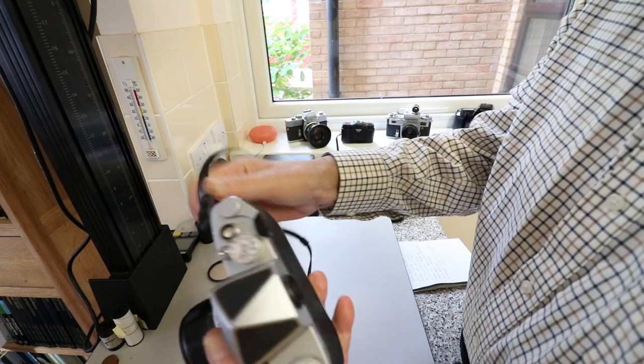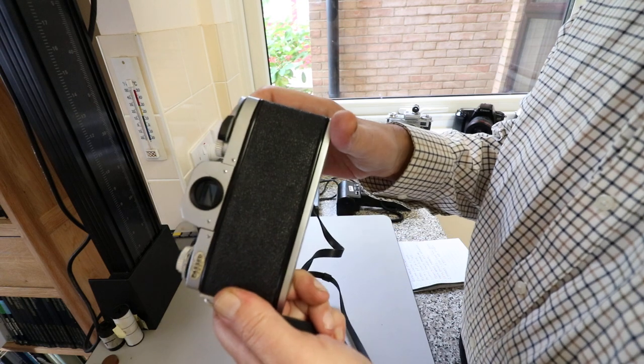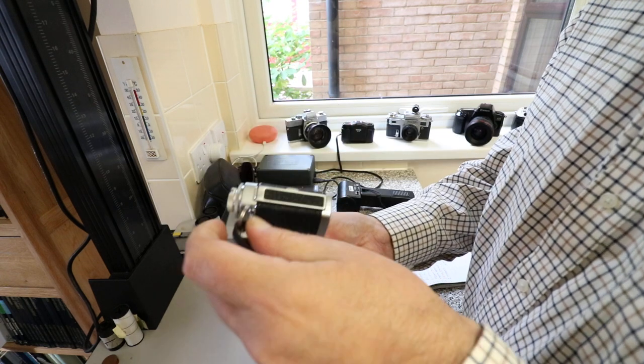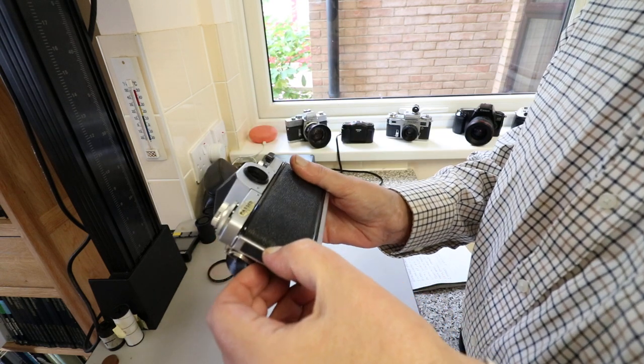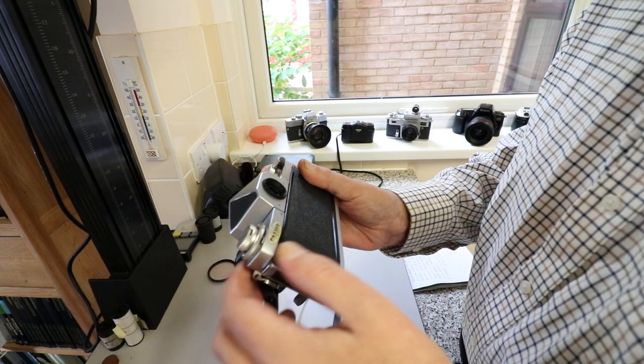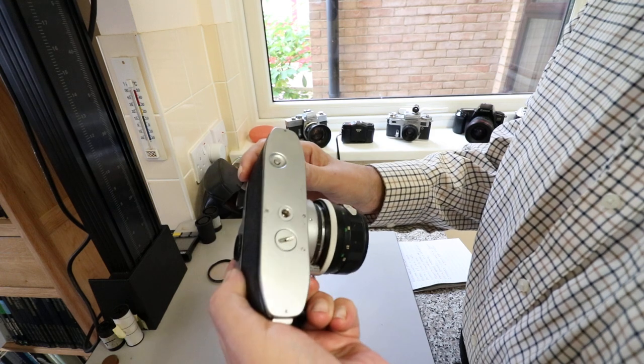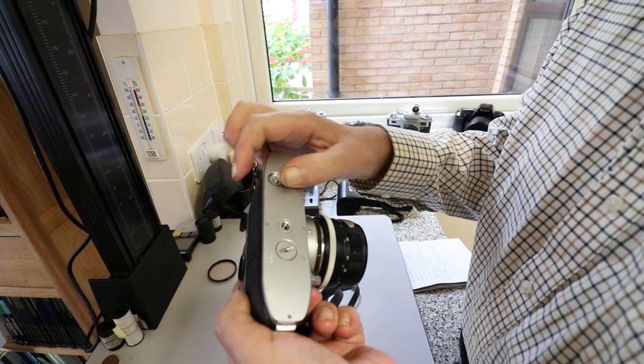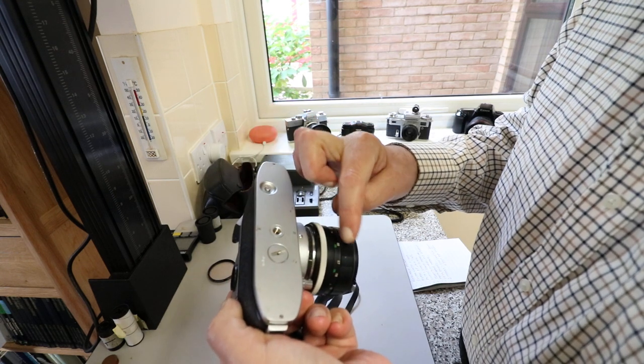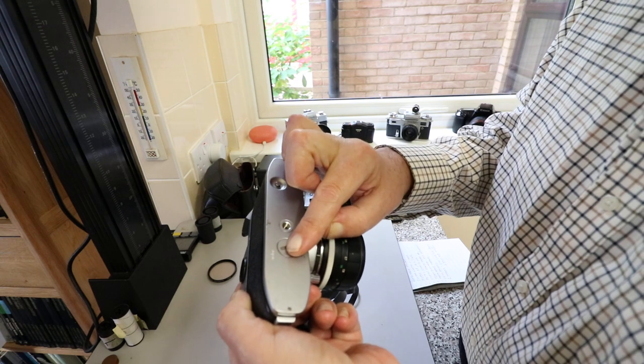On the side, just a strap lug. The back is fairly plain with a catch for the back door, so it isn't a pull-up-to-open type. On the bottom plate we have the rewind button, tripod mount in the middle, and battery compartment.